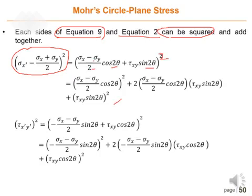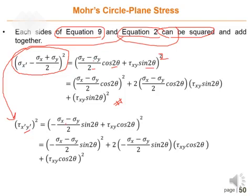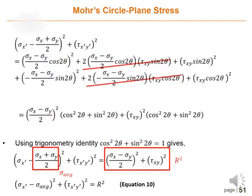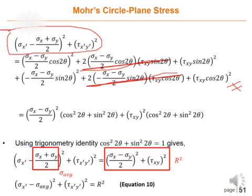After squaring both equations and adding them together, certain terms can be eliminated because they are equal and opposite — one is negative and one is positive, so they cancel out. The remaining terms give us the simplified equation.